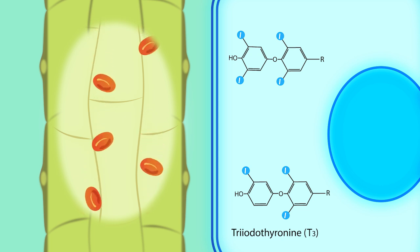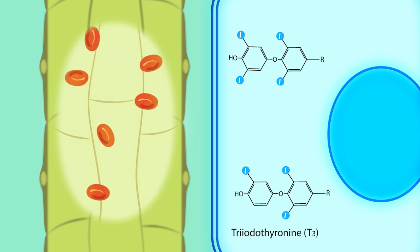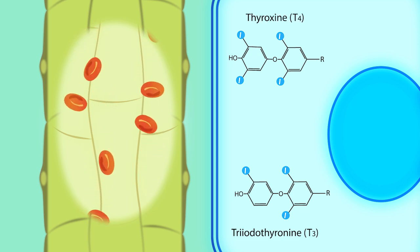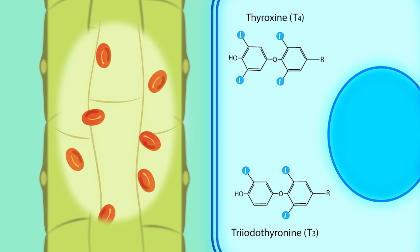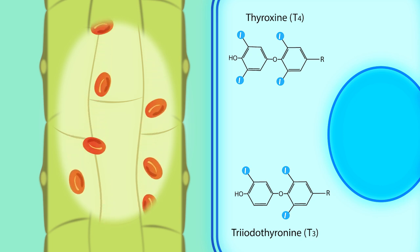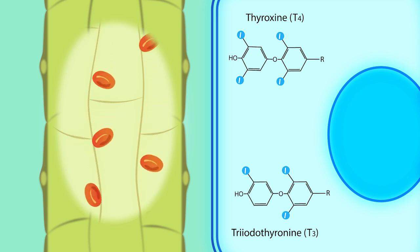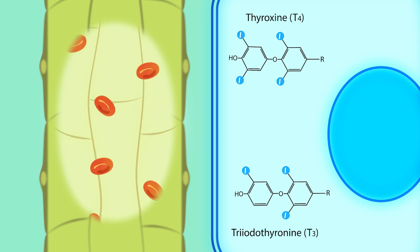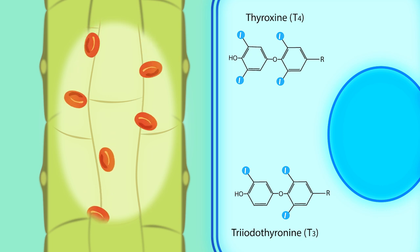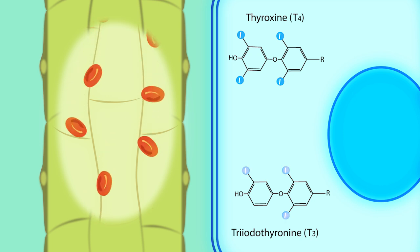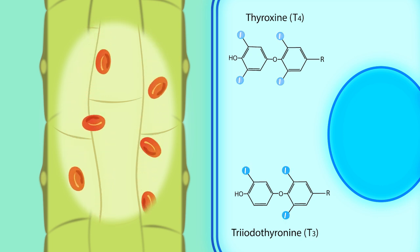Triiodothyronine, known as T3, and its prohormone thyroxine, known as T4, make up the thyroid hormones. Both are tyrosine-based molecules which are conjugated to iodide — three iodides for T3, and four for T4.